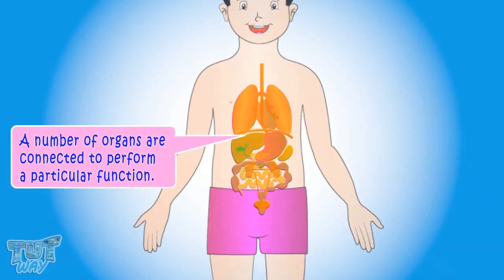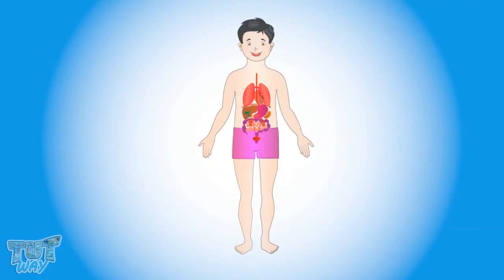A number of organs are connected to perform a particular function, and such organs connected together make an organ system. Let's learn about the different organ systems in our body.